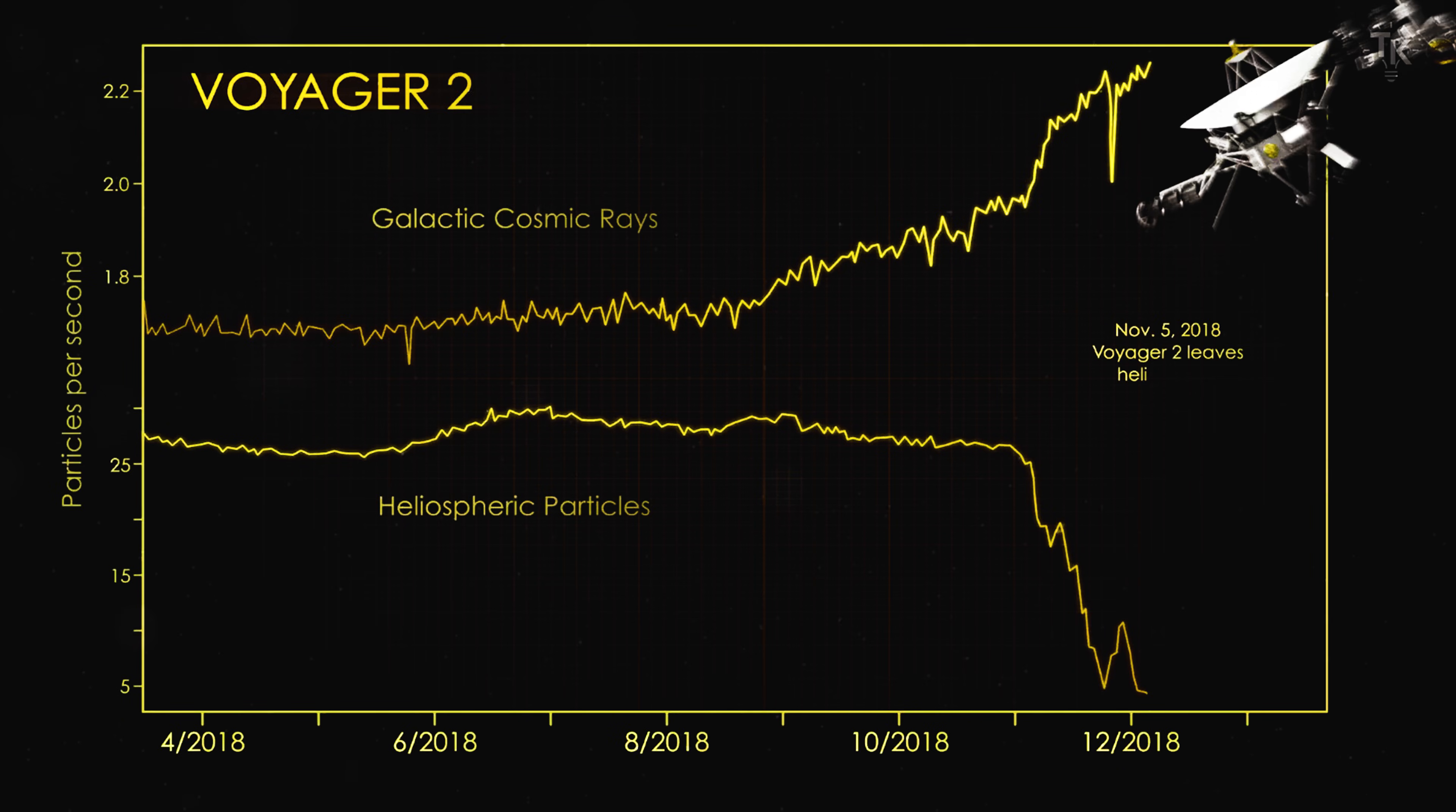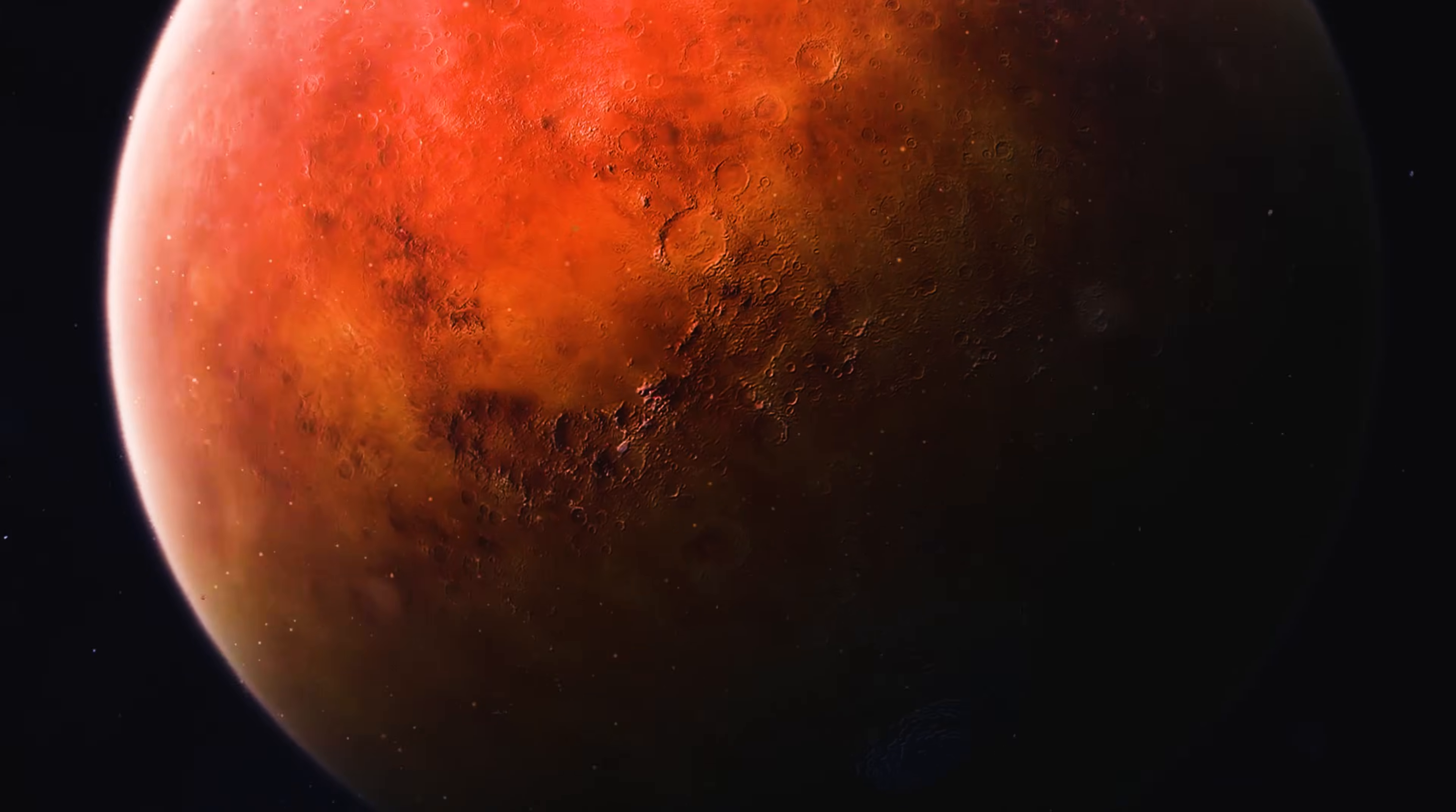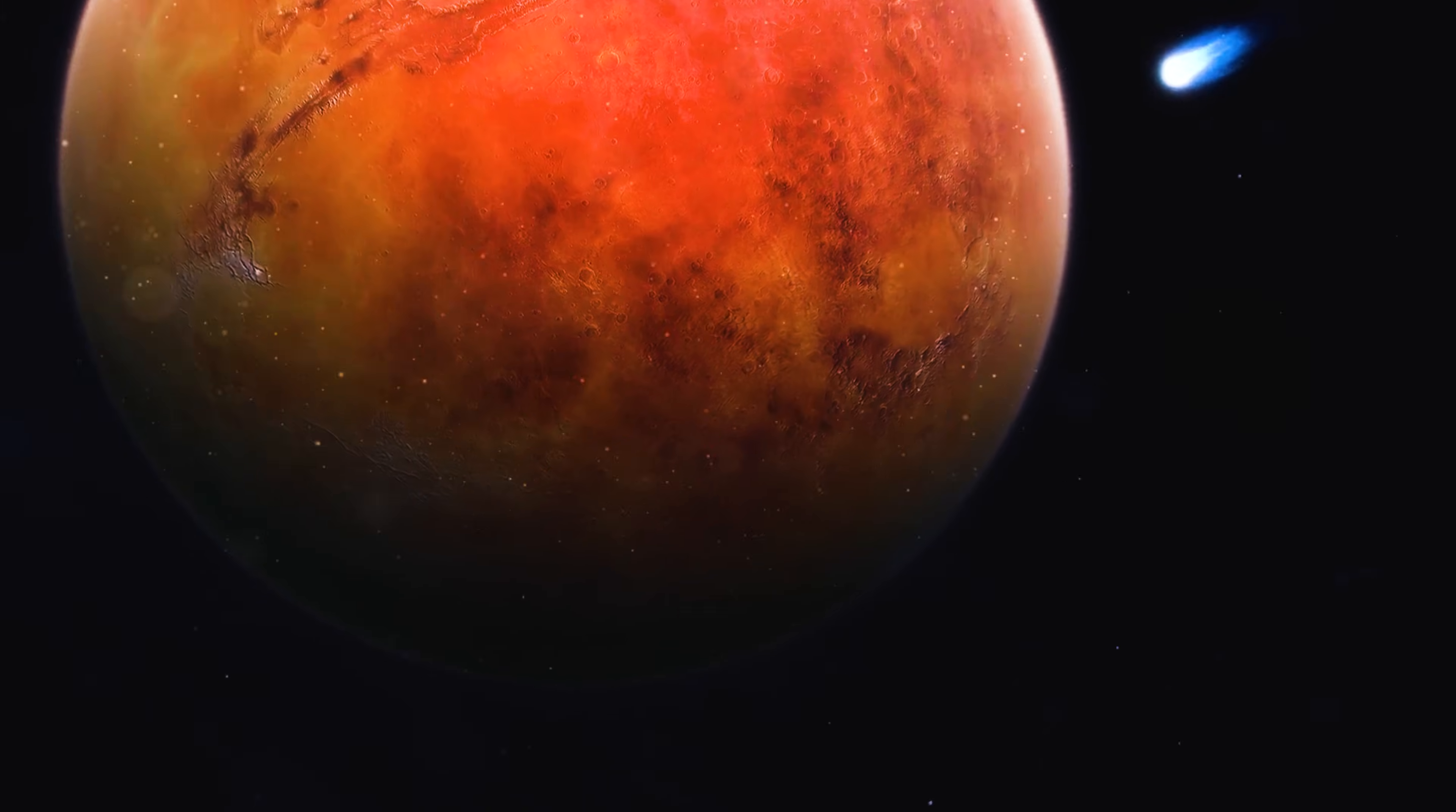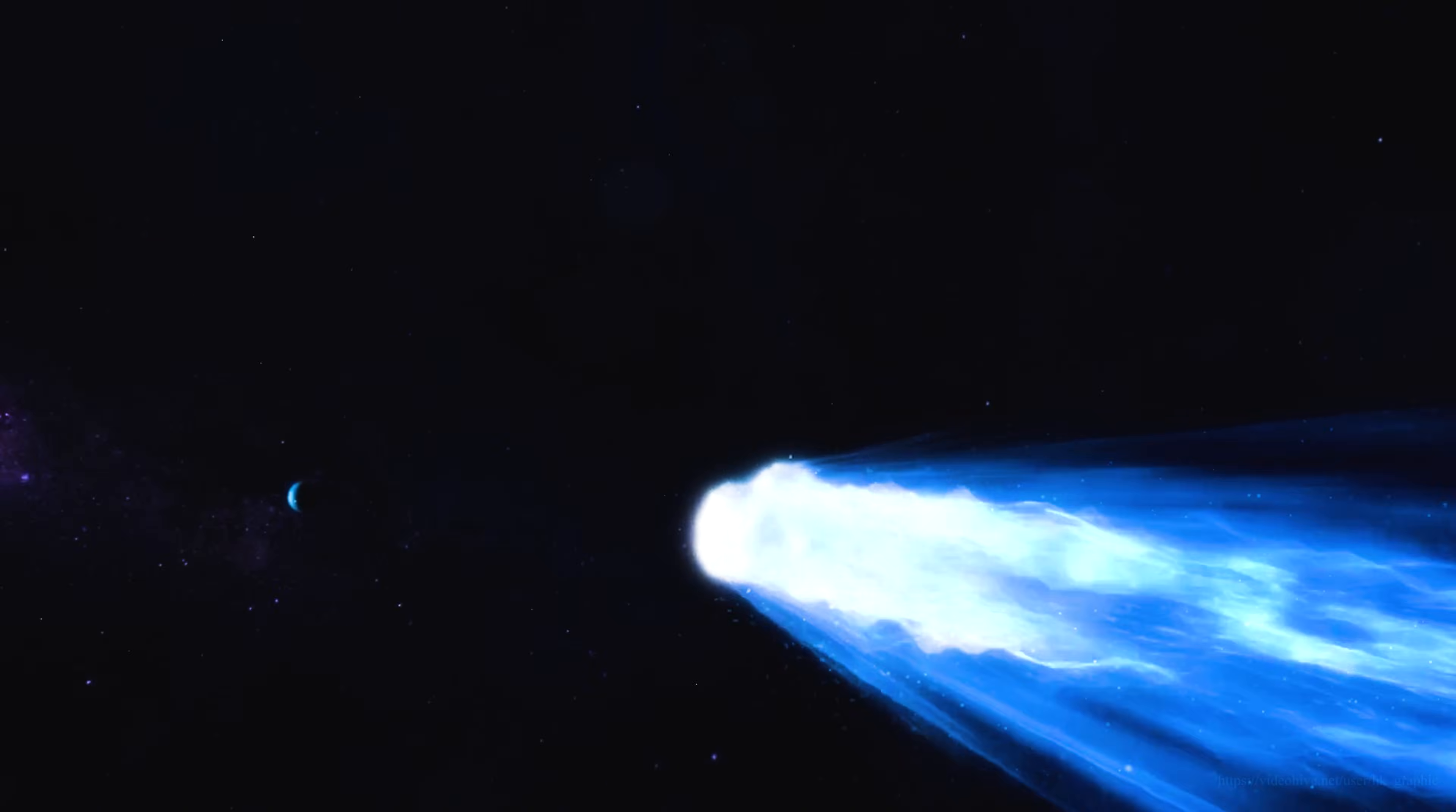Voyager 2 crossed the boundary six years later, but its experience was smoother, more gradual, more organic. This difference revealed something profoundly important. The heliopause isn't a stationary bubble. It is a wrinkled, shifting, dented frontier that moves and reshapes itself over billions of kilometers. A living boundary, a breathing system, and crossing it was only the beginning.